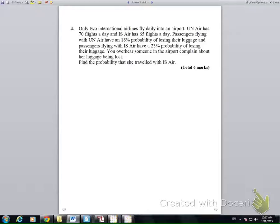On this particular problem, we have two airlines, UN Air and IS Air, and there's 70 flights for UN and 65 flights daily for IS. We also know that 18% of the UN passengers lose their luggage, and 23%, or almost one in four of the others, are going to lose their luggage as well.